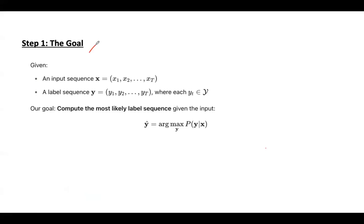Step one is to define the goal. We have an input sequence X — a sequence of observations, for example a sequence of words in a sentence — and a label sequence Y, which is the corresponding sequence of labels or tags for each input item. In POS tagging, Y is the POS tags for the words. Our goal is to predict the most likely label sequence Y-hat given the input sequence X.